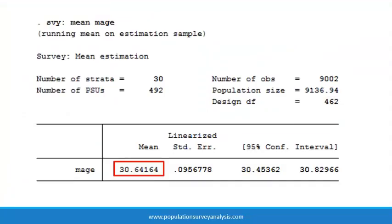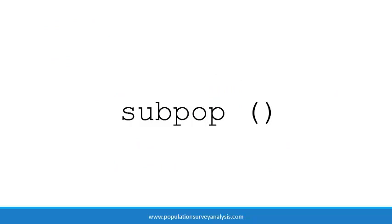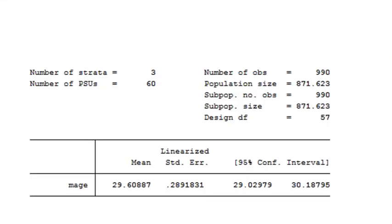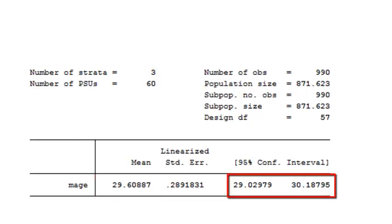The average age of mothers who have a child under 5 in Rwanda is 30.6 years. We are 95% sure that the real mean age of mothers in the population is between 30.5 and 30.8 years. To calculate the mean and 95% confidence intervals in a subpopulation, add the subpopulation option after SVY and before the colon: write comma, subpop, parentheses, variable name. The mean age of mothers who have a child under 5 in Kigali is 29.6 years, with a 95% confidence interval of 29.0 to 30.2 years.